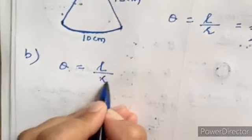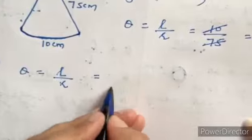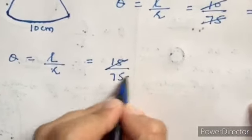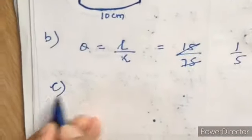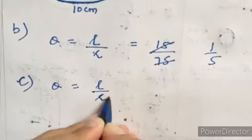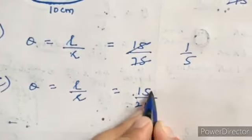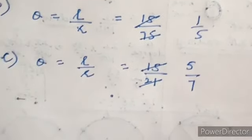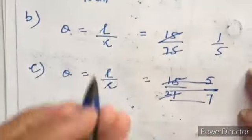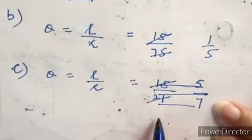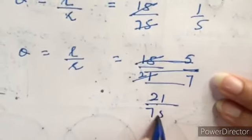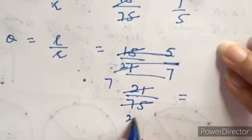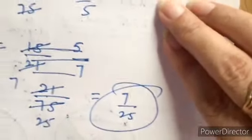In part B, theta equals L upon R. L is given as 21, divided by R which is 75. We cut the 3-times table: 21 and 75 simplify, giving 7 upon 25. So theta equals 7/25 radians. With this, we have finished this exercise.